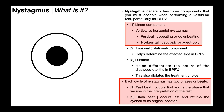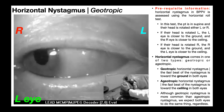Back to the linear component of nystagmus. When somebody has horizontal nystagmus, we don't say left-beating or right-beating. Instead we use the terms geotropic and ageotropic. Horizontal nystagmus in BPPV is assessed using the horizontal roll test. In this test, the patient is in supine — on their back — and their head is rotated either left or right.